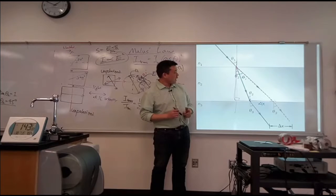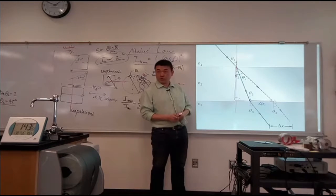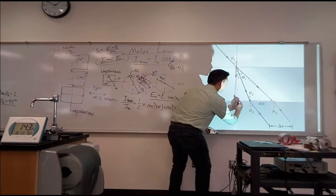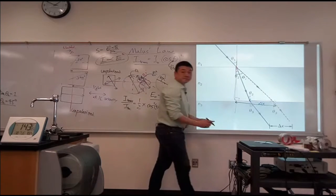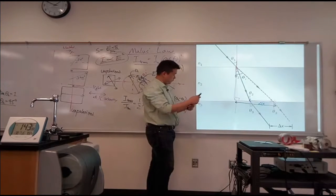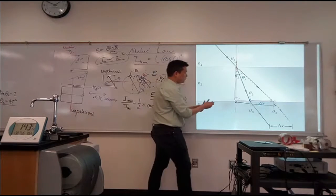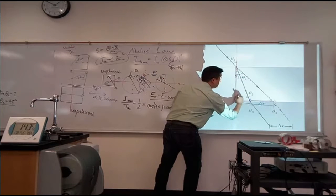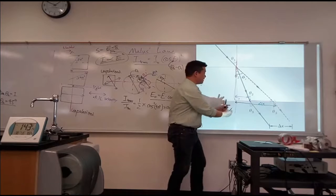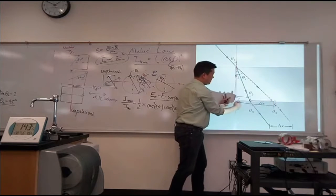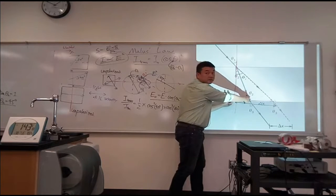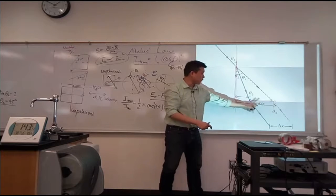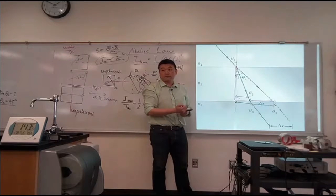So what I'm hoping you are realizing is that you have enough information to calculate this length here. And you have enough information, in purple, to calculate this angle, to calculate this length here, and calculate this length here. And delta x is the difference between those two lengths.